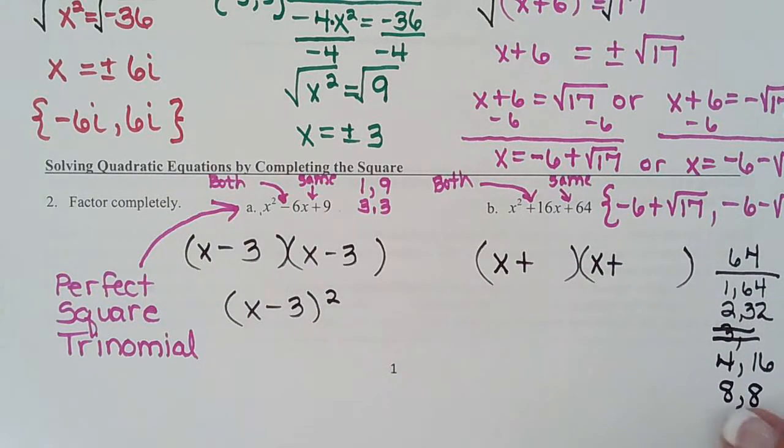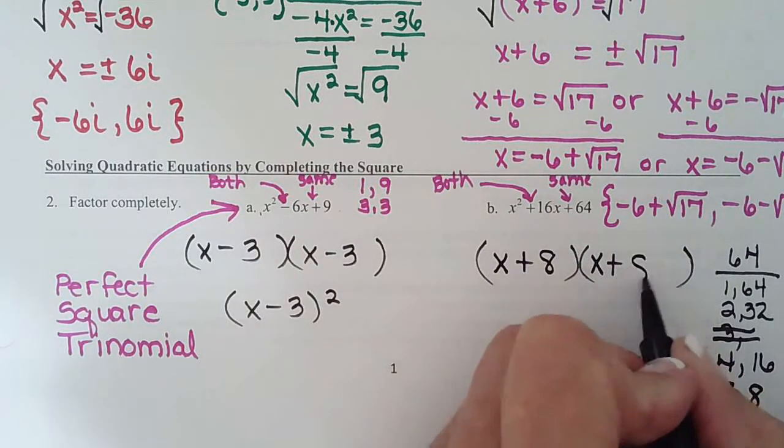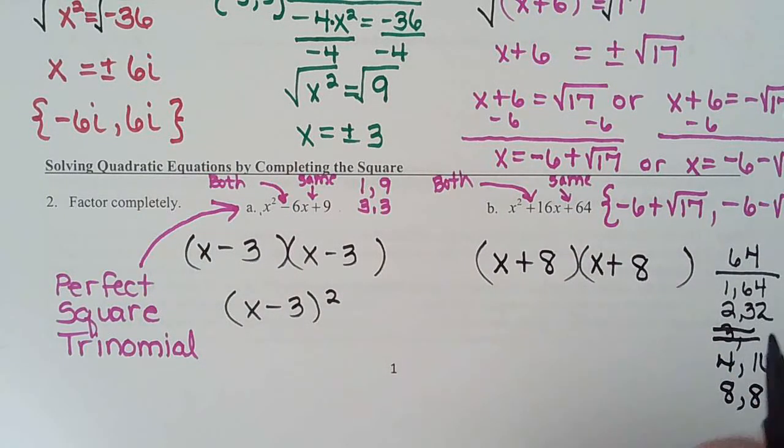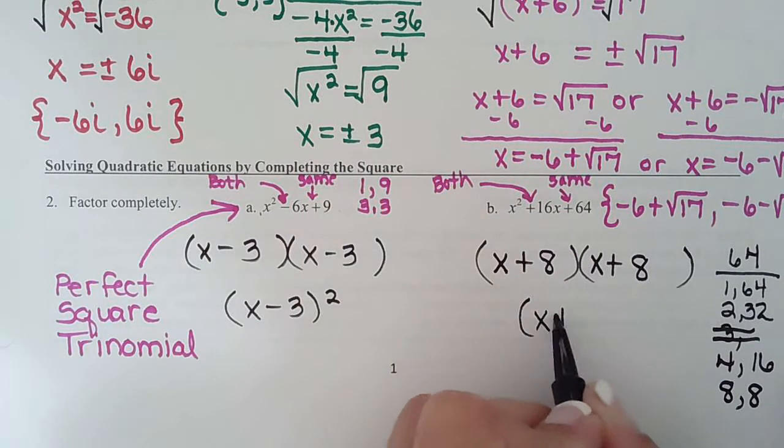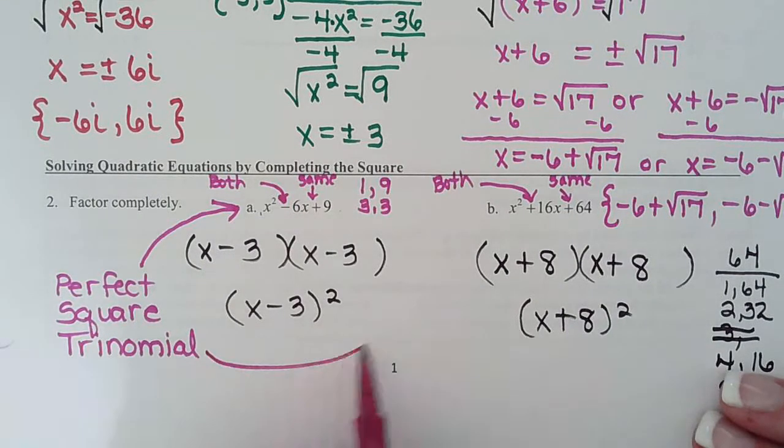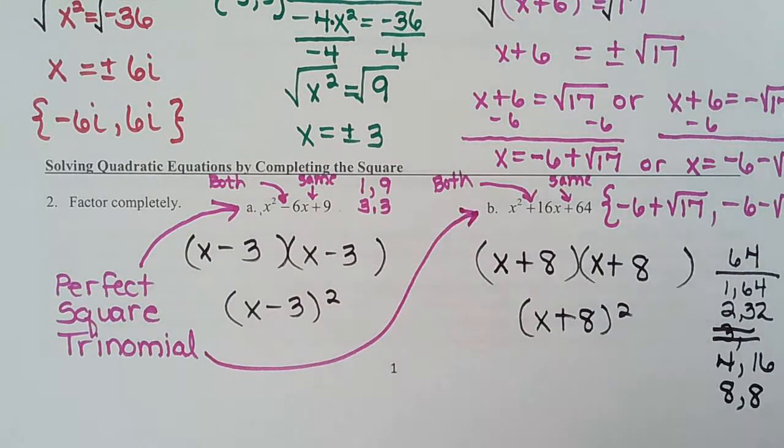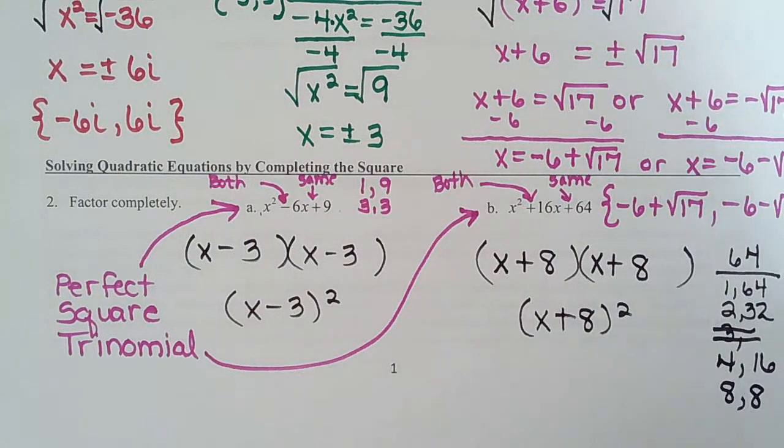There's our factors. 8 plus 8 is 16. So is this a perfect square trinomial? Yes, it is, because the two factors match. So that's a perfect square trinomial, and so is this. Like I said, you don't have to notice at the beginning. You'll just see when you do your two factors that they match, and then you'll know it is.